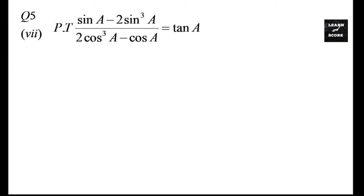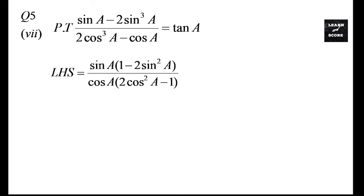Moving to the next one, that means question number 5, seventh part. Prove that (sinA - 2sin³A) / (2cos³A - cosA) = tanA. Look at the numerator — sinA is common. And look at the denominator — cosA is common. So we can rewrite it as sinA(1 - 2sin²A) / cosA(2cos²A - 1).